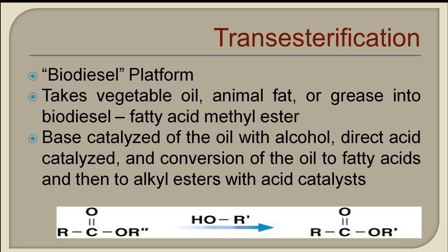The platform specifically for making biodiesel is termed transesterification. In making biodiesel, we take vegetable oil, animal fat, or grease and convert it to biodiesel — fatty acid methyl ester. The process involves base-catalyzed reaction of the oil with alcohol, direct acid-catalyzed reaction, or conversion of the oil to fatty acids and then to alkyl esters with an acid catalyst. The final product is methyl ester, which is biodiesel.